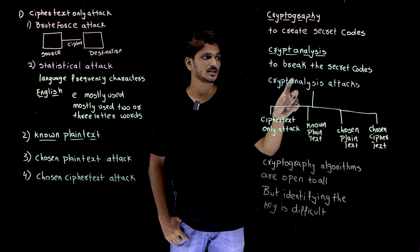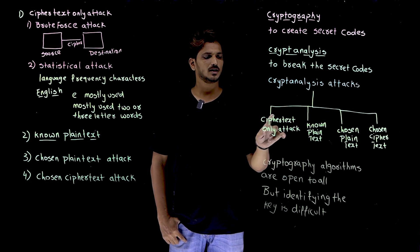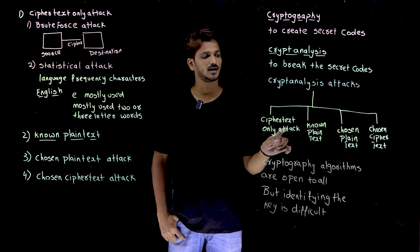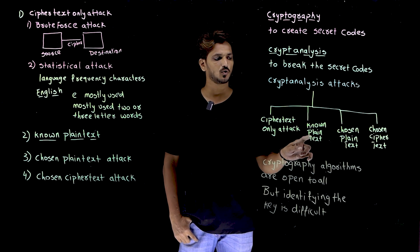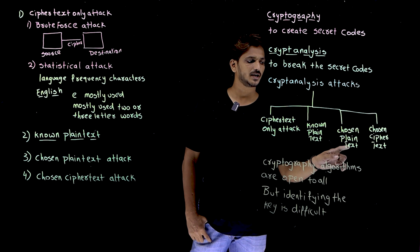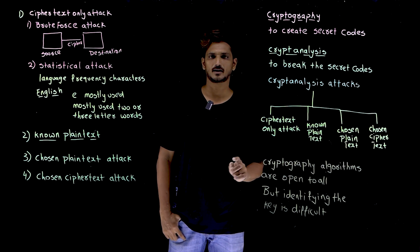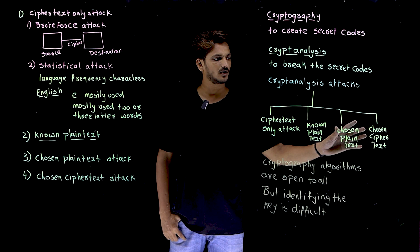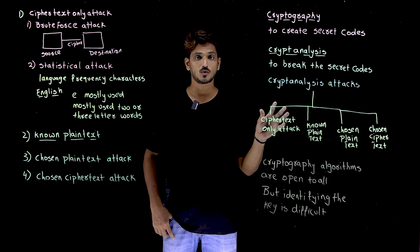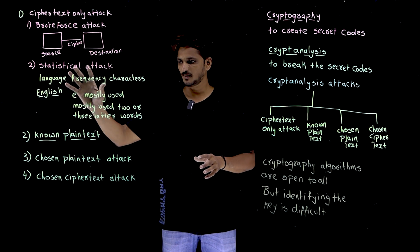The different cryptanalysis attacks we are going to face are: the first one is ciphertext only attack, the next one is known plaintext attack, then chosen plaintext attack, and chosen ciphertext attack. We will discuss what these four types of attacks are in a moment.